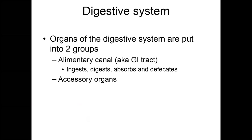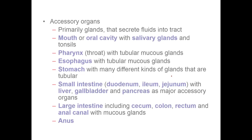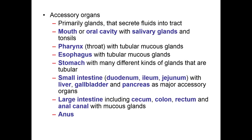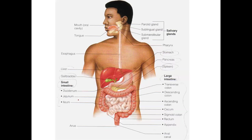The digestive system has two parts: the alimentary canal and the accessory organs. The alimentary canal, also known as the GI tract, ingests, digests, absorbs, and defecates. From beginning to end, it is one continuous tube — that is the alimentary canal.